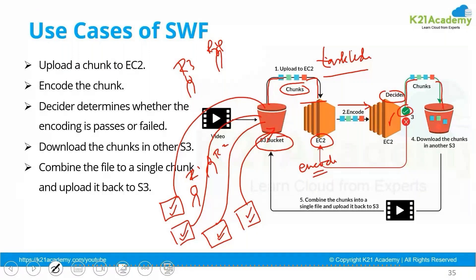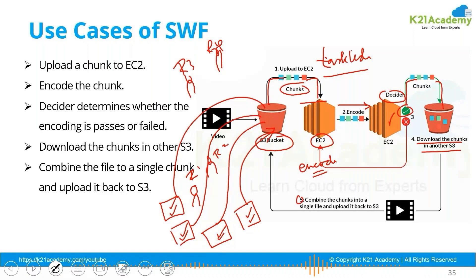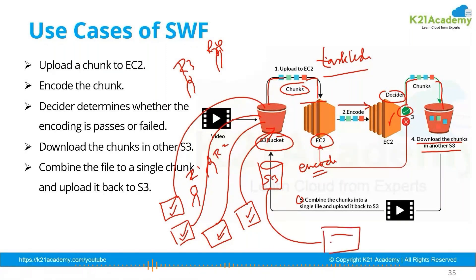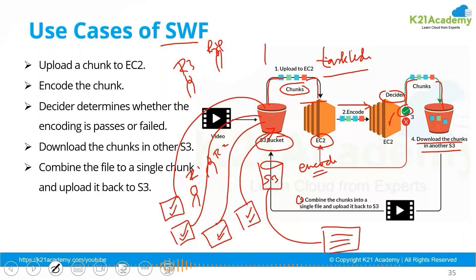The decider checks whether the chunks have been encoded properly as per the requirement. If the task execution was successful, the encoded chunks will be uploaded to another S3 bucket where all the small chunks will be combined together by a program. They will then be uploaded to an S3 bucket from where the broadcasting team can pick up the stream.